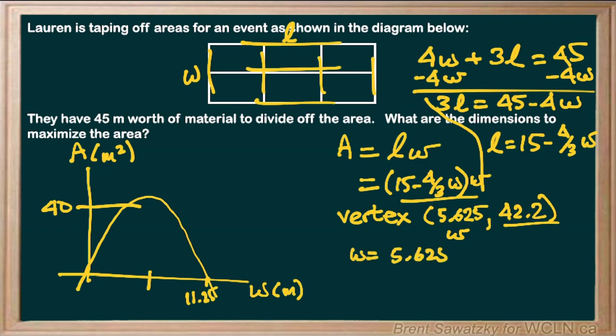We've got one dimension but we can't forget that it asks for the dimensions, so let's go back. How are we going to figure out our length, the other dimension? We do have a formula that we laid out just for length, so let's plug that in: 15 minus four thirds.